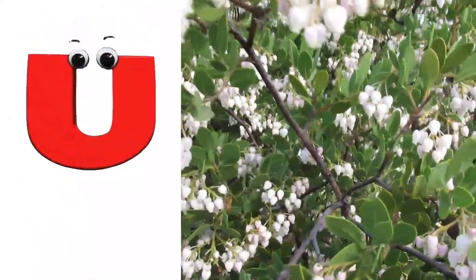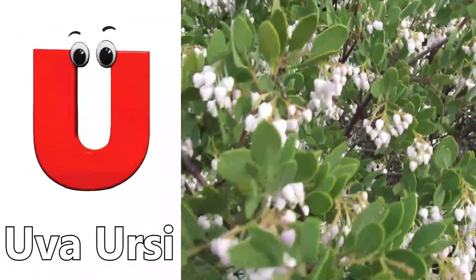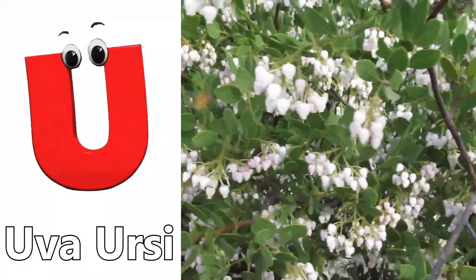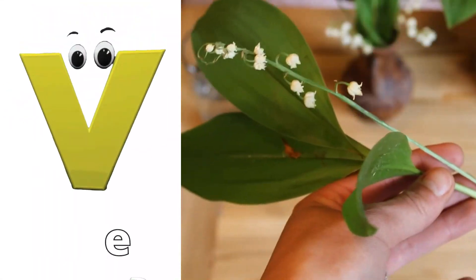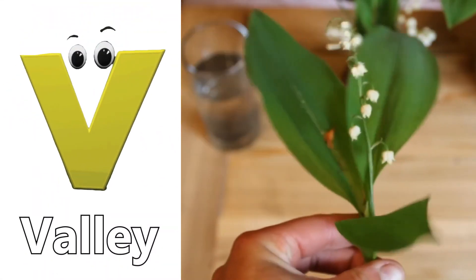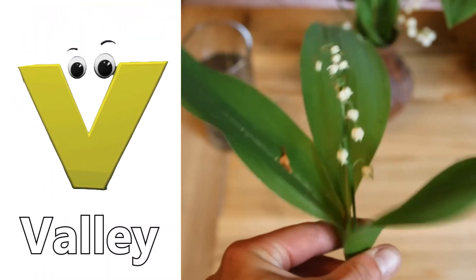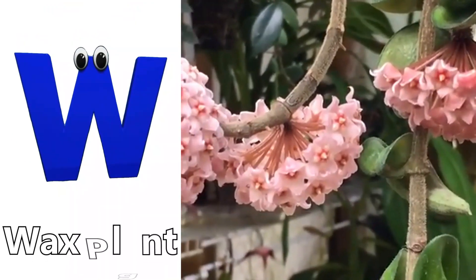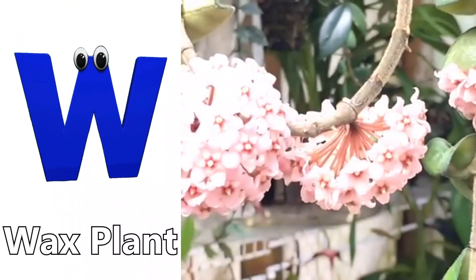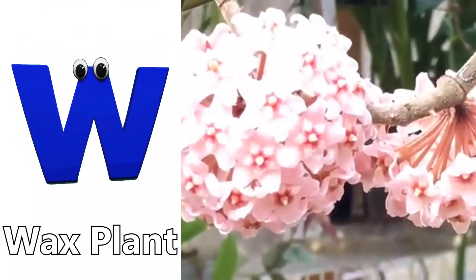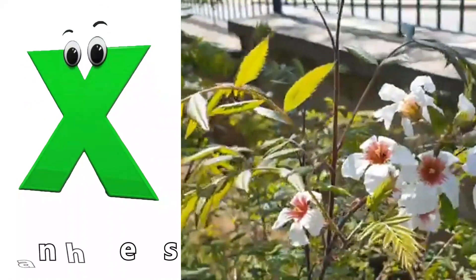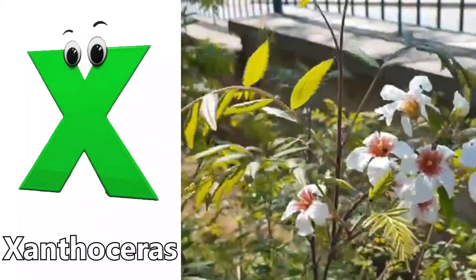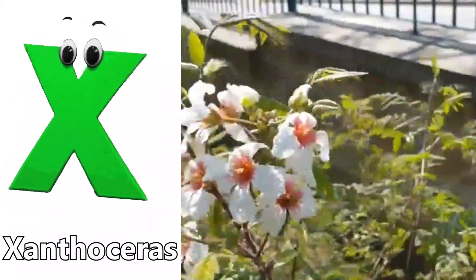U is for Uva Ursi. V is for Valley. W is for Waxplant. X is for Xanthosaurus.